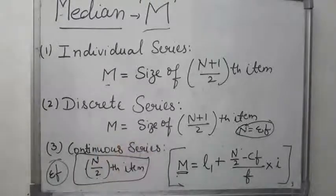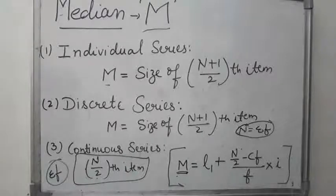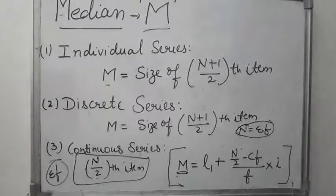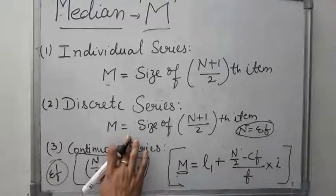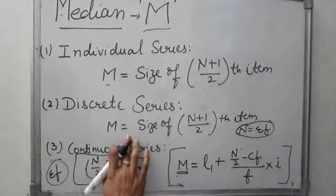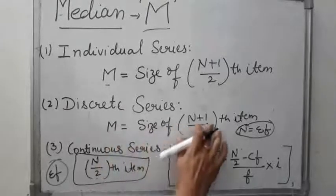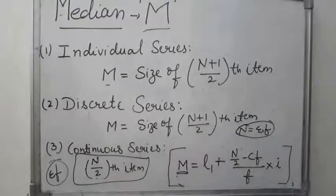After applying this formula in the discrete series, we find the median value corresponding to the (N + 1) / 2 th item in the cumulative frequency column. So this is about the discrete series.